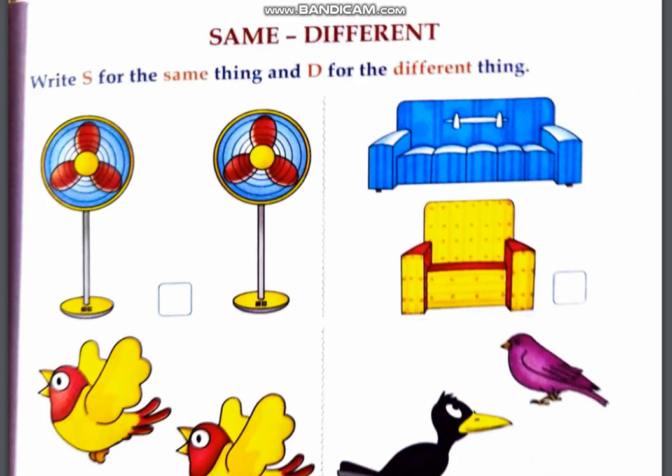Next topic is same or different. Same means ek jaisa, different means alag alag. Now you have to watch these pictures and identify if they are same or different. Write S for the same things and D for the different things. There are two fences, both are same. Both of them are same, so S.